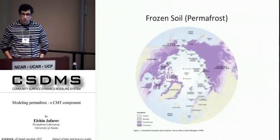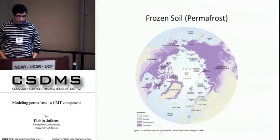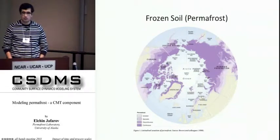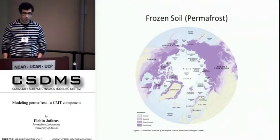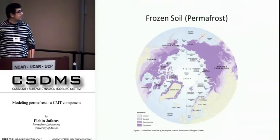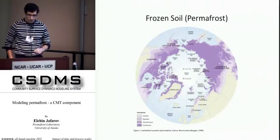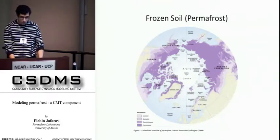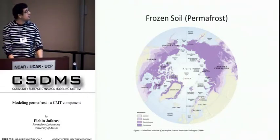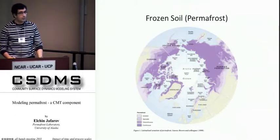Permafrost is frozen soil that stays frozen for more than two consecutive years. Another definition I'm going to use is the active layer thickness, which is the depth of seasonal soil thaw. Permafrost occupies 24% of the land in the northern hemisphere and 80% of the land in Alaska.